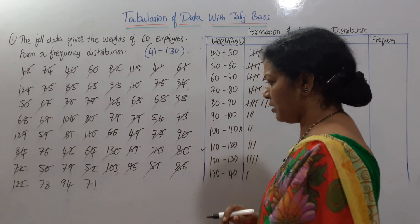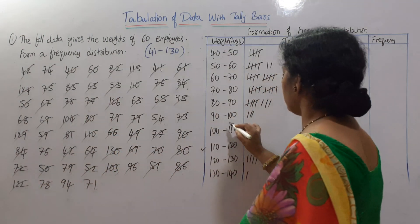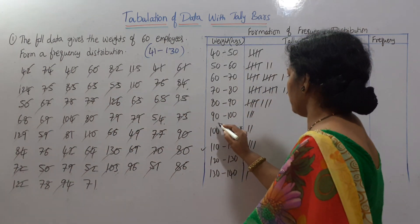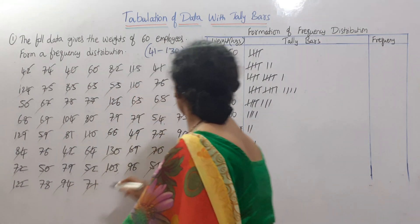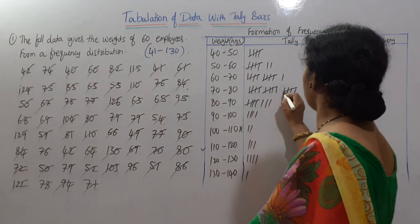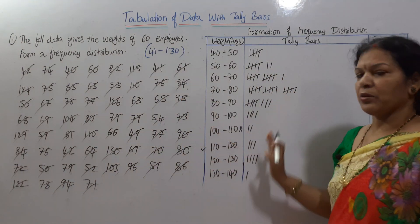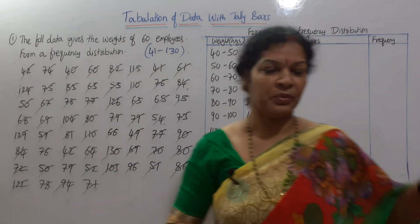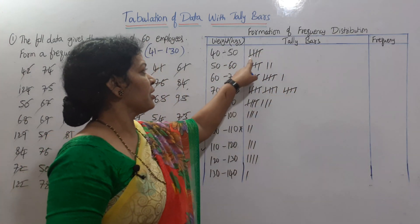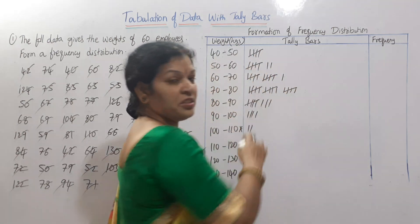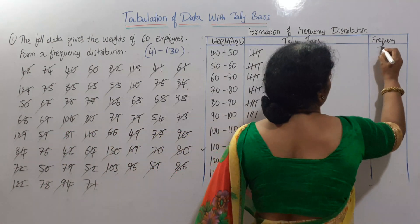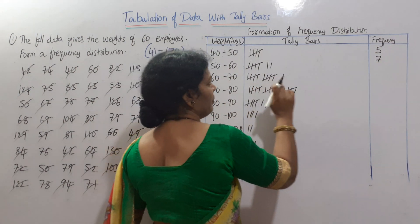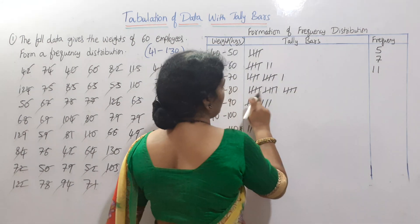122 falls in 120 to 130. Next: 78 falls in 70 to 80. 94 falls in 90 to 100. 71 falls in 70 to 80. Now the 70 to 80 interval has a tally count of 5, then 10 — we cross at every group of 5. Count so far is 50 for that interval.